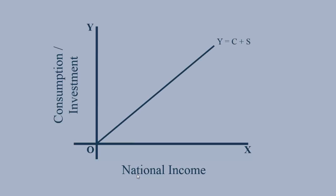Consumption and investment expenditures are measured along the y-axis and national income along the x-axis. Y equal to C plus S is the Aggregate Supply Curve. C plus I is the Aggregate Demand Curve.